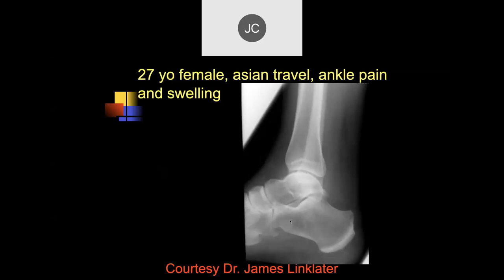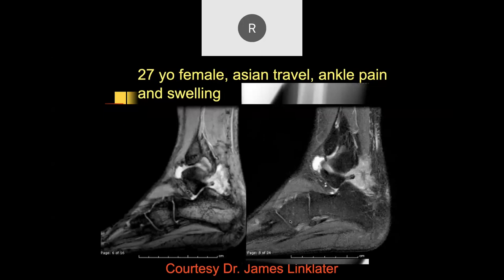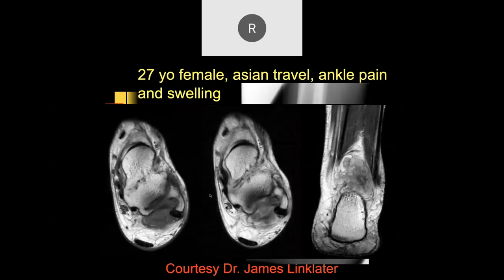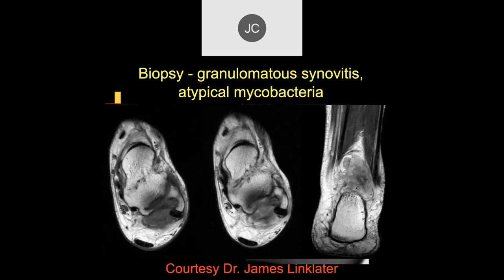A 27-year-old female Asian patient with ankle pain and swelling. The MRI shows a large joint effusion with synovial thickening and synovitis, fluid collection, and a lot of what looks like a fluid-line type appearance with internal signal intensity. They biopsied this and it was atypical mycobacterial disease — all granulomatous synovitis with no abscess.